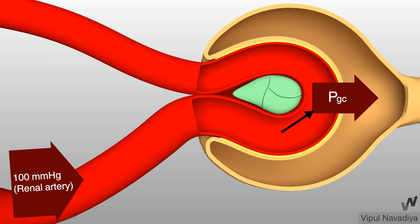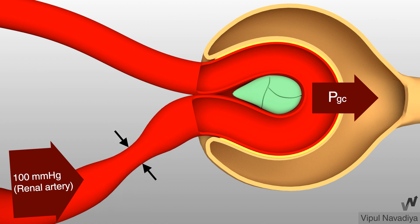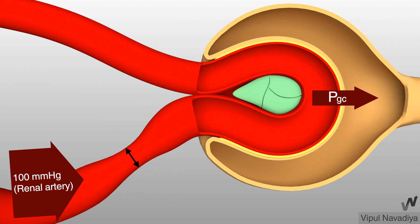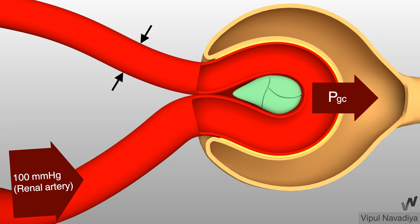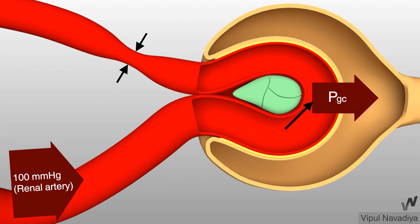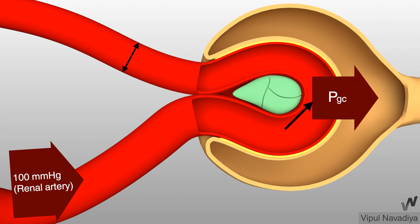Glomerular hydrostatic pressure is a very important factor determining glomerular filtration rate. Afferent and efferent arterioles resistance have distinct effects on it. If resistance of afferent arterioles increases, less pressure is transmitted from the renal artery to the glomerulus, leading to a decrease in glomerular pressure. If resistance decreases, more pressure is transmitted, so pressure increases. Efferent arteriole resistance has the opposite effect: if it constricts, pressure in the glomerulus increases, and if it dilates, the pressure reduces.